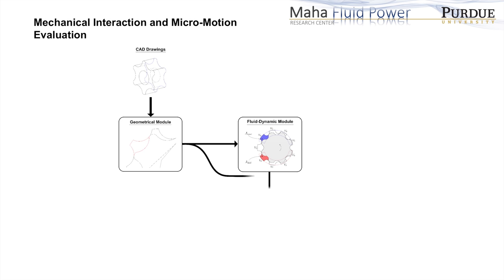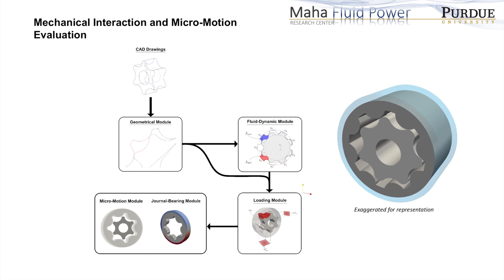Once the pressure distribution inside of the unit is known, a mechanical model is used to calculate the forces and torque acting on the gears. This information is passed to a journal bearing model used to evaluate the gear micromotion. Once the instantaneous position of the gears is known, the geometrical information is updated online.